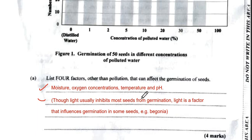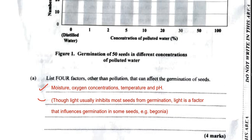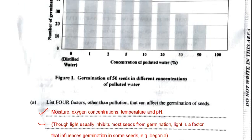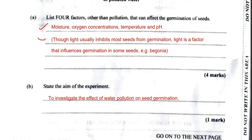So the four factors would be moisture, oxygen concentration, temperature, and pH. These all influence seed germination. We would receive four marks for this question. Moving along to the next question.